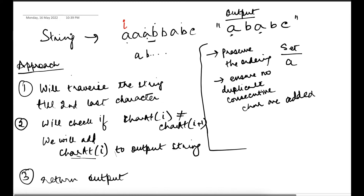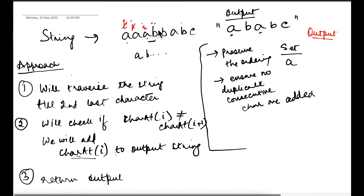Let's dry run with the string 'aabc'. i is at the first 'a', i+1 is the second 'a' — they are the same, so i moves ahead. i is at the second 'a', i+1 is the third 'a' — still the same, so i moves ahead. Now i is at the third 'a' and i+1 is 'b' — these are different, so we add s[i] which is 'a' to the output. i moves ahead. Now i is at the first 'b' and i+1 is the second 'b' — same, so nothing happens.